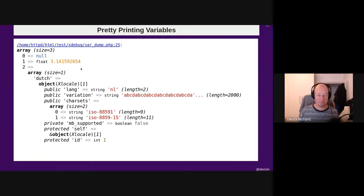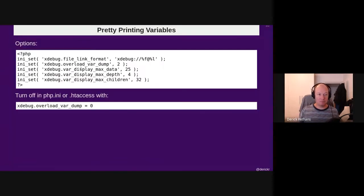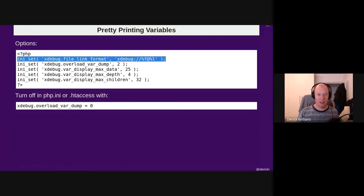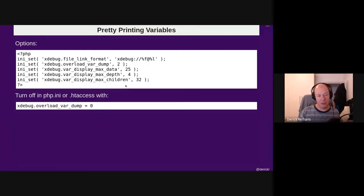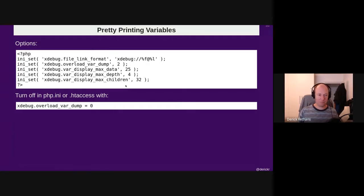Many frameworks and WordPress have their own var_dump wrappers to do something similar, but xdebug was first, and it's been around for about 17 years. The pretty printing is quite configurable — you can set a link format, control how many data elements you get, how long the strings are going to be, and so on. It's more configurable than PHP's normal var_dump.